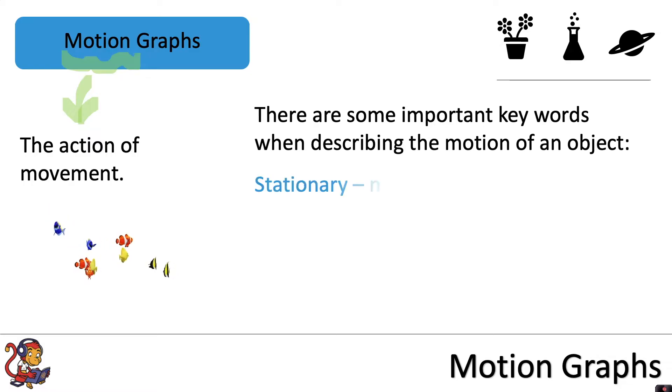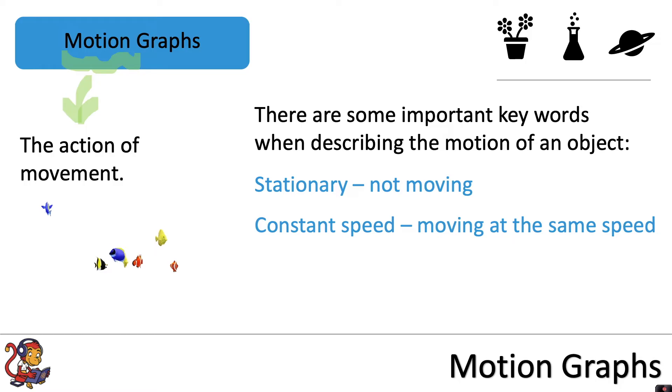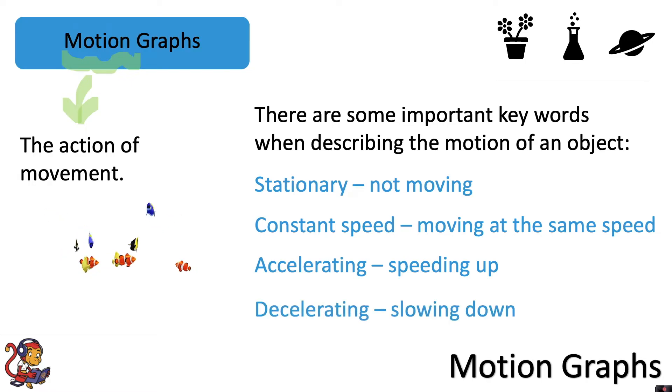For example, it could be stationary which means it's not moving. It could be moving at a constant speed which means it's moving at the same speed. It could be accelerating which means it's speeding up, or it could be decelerating which means it's slowing down.